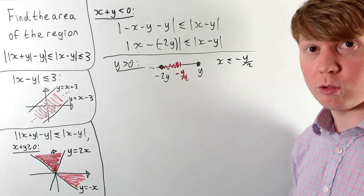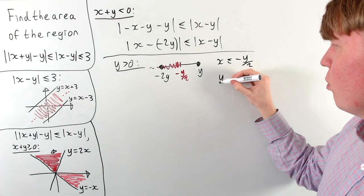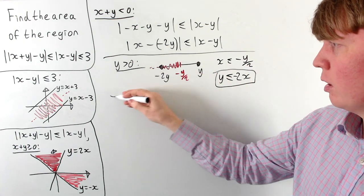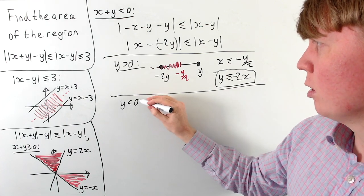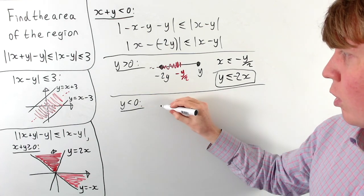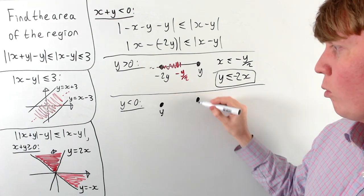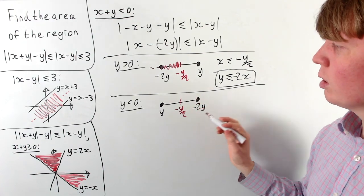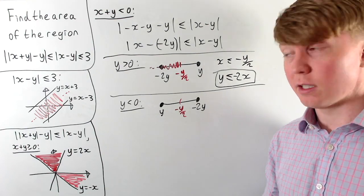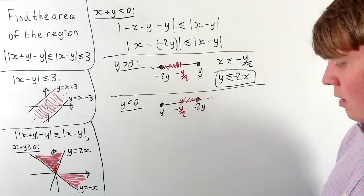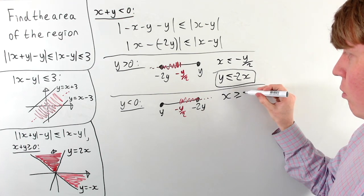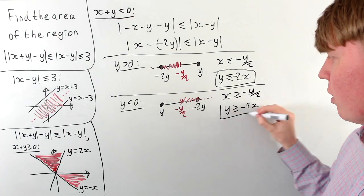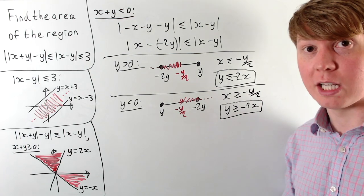When y is negative, the picture reverses: minus 2y is positive on the right-hand side. Halfway between them is still minus y over 2. In order for x to be closer to minus 2y than to y, we need x to be greater than or equal to minus y over 2, which rearranges (changing the sign of the inequality) to y greater than or equal to minus 2x.